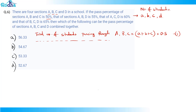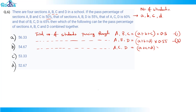Similarly, equation 2: total students passing through A, B, and D is 55%, so (a + b + d) × 0.55. Equation 3: total passing through A, C, and D is 60%, so (a + c + d) × 0.6. Equation 4: passing through B, C, and D is 65%, so (b + c + d) × 0.65.